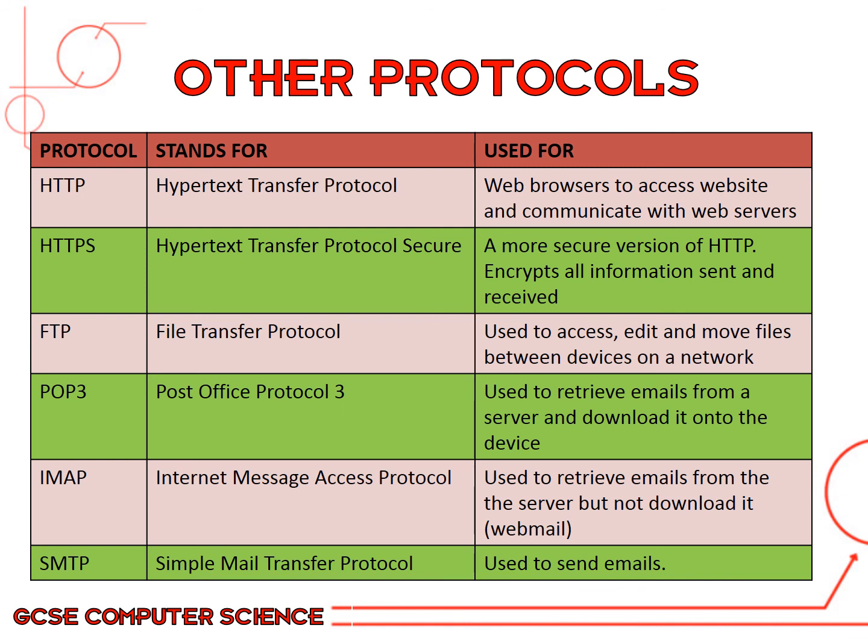POP3 — Post Office Protocol 3 — is used to retrieve emails from a server and download them onto the device. IMAP is very similar in that it is used to retrieve emails; however, it does not download them onto the device, and would be used for web mail such as Hotmail. Finally, SMTP — Simple Mail Transfer Protocol — is used to send all emails.